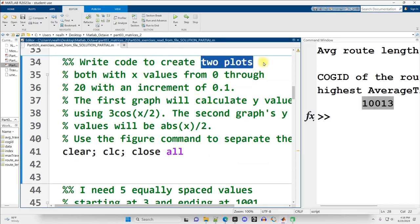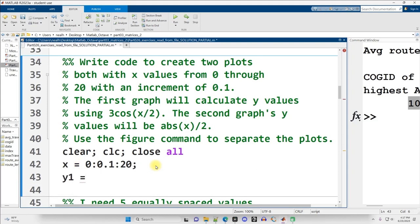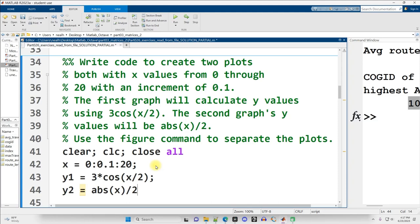All right, next question. Write code to create two plots, both with x values from 0 through 20 with an increment of 0.1. The first graph will calculate y values using 3 times cosine of x over 2. And the second will graph absolute value of x divided by 2. Use the figure command to separate the plots. Okay, so this is practice with graphing. Let's create our x vector, our x-axis vector, 0 to 20. But we want an increment. The default increment here would be 1. We want an increment of 0.1. So I put that between the colons there. The y values for my first graph I'll put into a vector named y1. And it needs to be not just 3 cos, but 3 times cos. We're not in math class. We need to explicitly indicate the multiplication in MATLAB or an octave. And then x divided by 2. All right, and I might as well just calculate the second figure's calculation. Now, it's a little bit silly that I did absolute value here, because we're only going to see the positive half of the graph because of the x values that we chose. But we'll just follow the instructions anyway and go along with it.